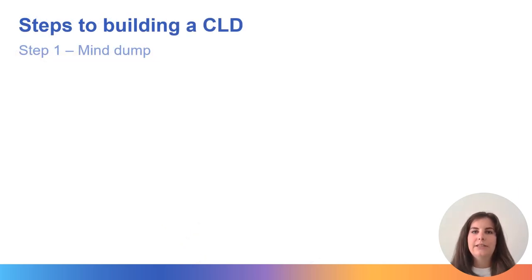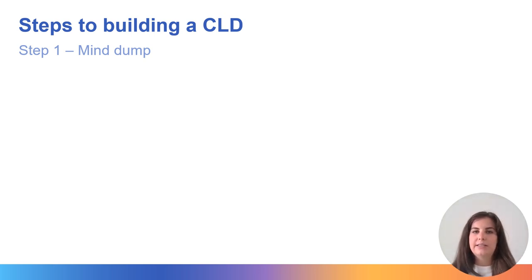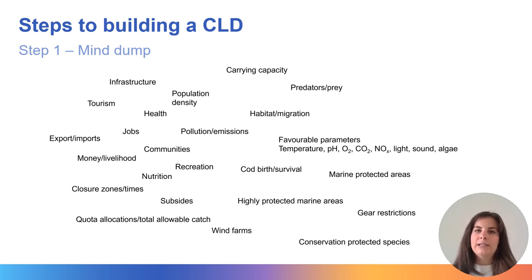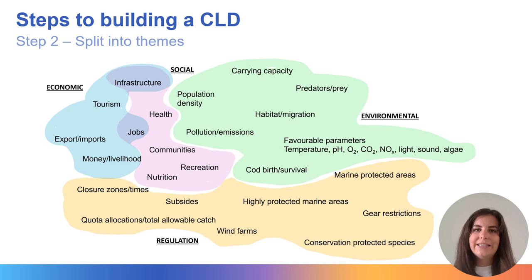Now we're going to go through the steps to build your own causal loop diagram. Step one is to mind dump any variables that you think are related to your question or research topic. In this example, we're going through the sustainability of cod fisheries, and here we've dumped any variables we think are relevant. Step two is to split these variables into key themes — for the cod fisheries, we consider the three pillars of sustainability: environmental, economic and social, as well as the regulations that act upon these.